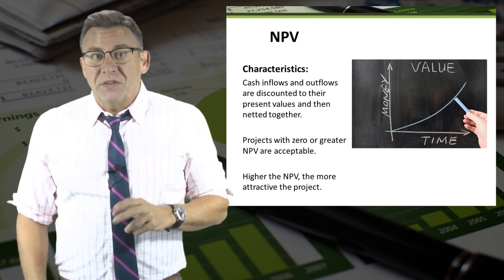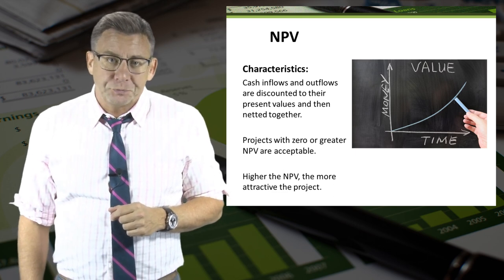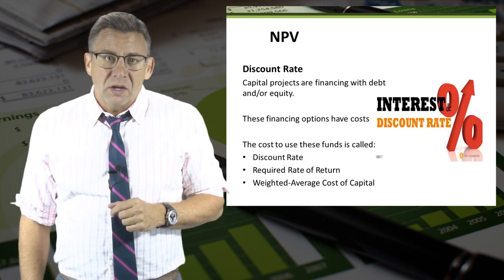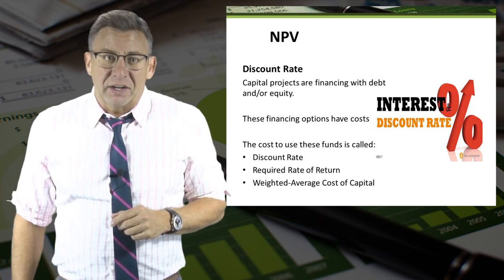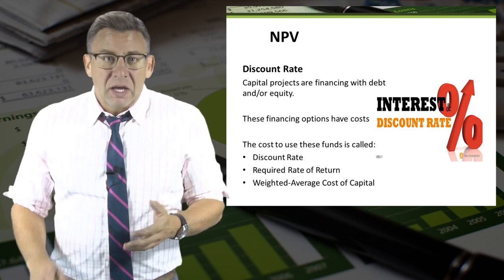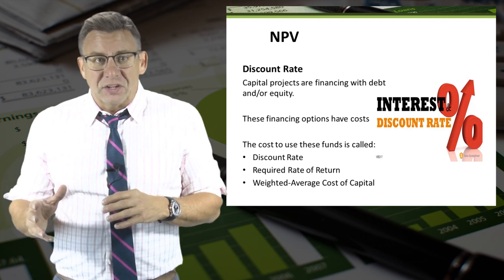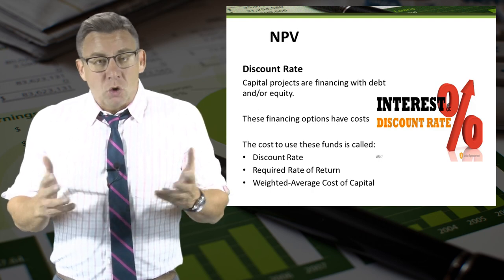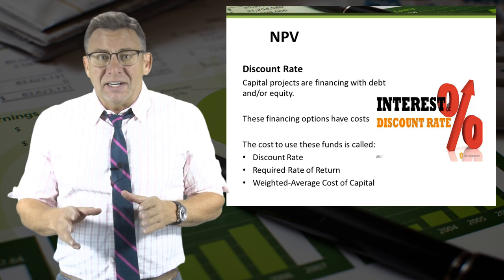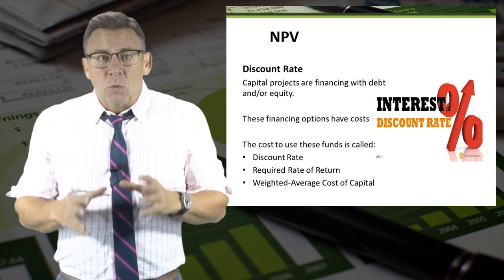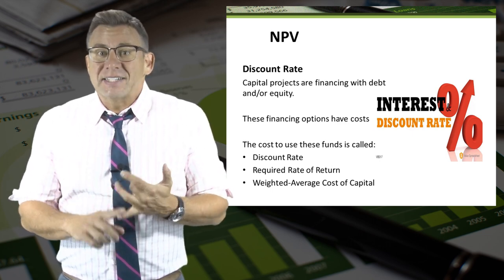Projects with zero or greater net present value are acceptable. The discount rate is used in net present value calculations. Capital projects are financed with either debt or equity or a combination of both. These financing options have costs, and we are going to call these costs the discount rate.